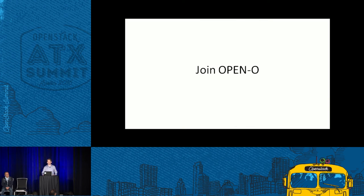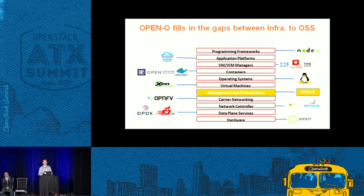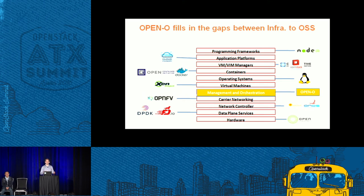We'd like to invite all of you to join us as we build this system. OpenO is a Linux Foundation project. We are planning to officially launch on June 1st. We fill a gap between the infrastructure and OSS layer. You can see where we fit with various other Linux Foundation projects — Linux Foundation has been working on performance functions, SDN controllers, NFV, and operating systems and containers. The one area that hasn't been filled in is management and orchestration, and that's the area we're focusing on.